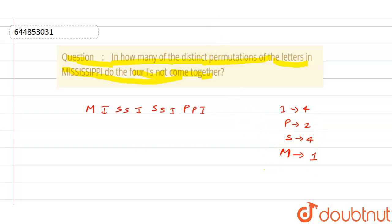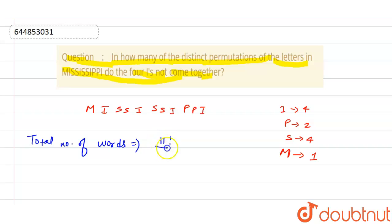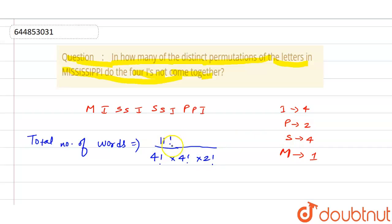The total number of arrangements (words) that can be formed from the letters of Mississippi equals 11! divided by 4! (for the four I's) multiplied by 4! (for the four S's) multiplied by 2! (for the two P's), since these letters are repeating.